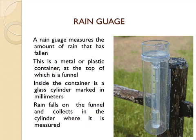Now we will study a bit in detail about rain gauge. A rain gauge measures the amount of rain that has fallen. It is a metal or plastic container at the top of which is a funnel. Inside the container is a glass cylinder marked in millimeters. Rain falls on the funnel and collects in the cylinder where it is measured. There are two tubes — an outer one and an inner one covered with a funnel. When rain drops enter the funnel, they pass into the inner tube which has marked readings. As the water level rises in the tube, they can note down the reading of the rainfall.